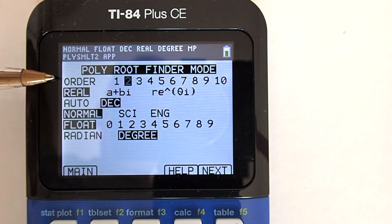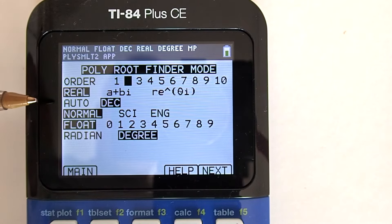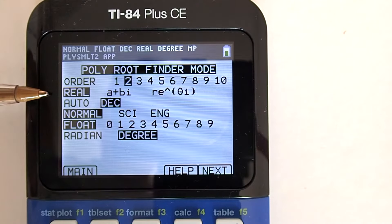All the other settings here are okay, but I will briefly cover them. The next line down, real, for real numbers. We want this one for our equation.